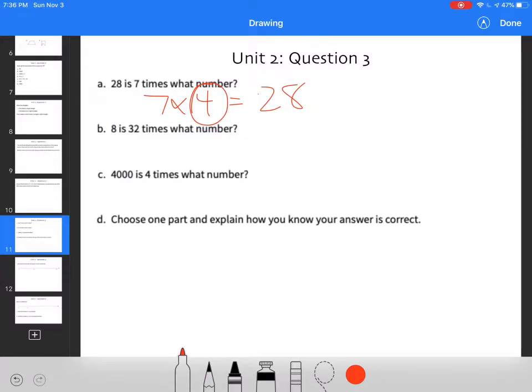8 is 32 times what number? So 32 times 1 fourth is going to be 8, because 32 divided by 4 is 8. So 1 fourth would be my answer.